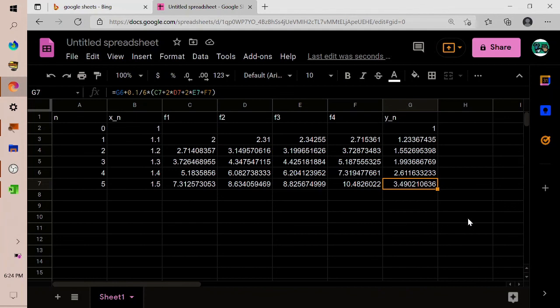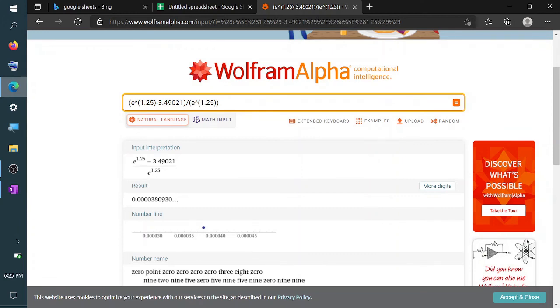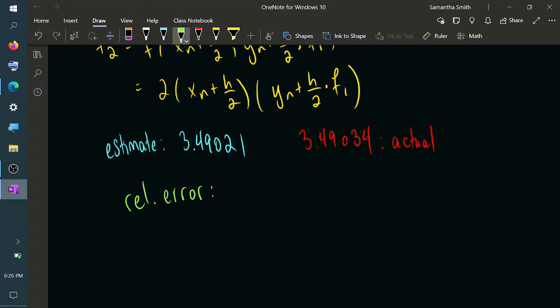RK4 is predicting an output of 3.4902. So right away we can see a huge increase in accuracy between the estimate and the actual value. And if you go ahead and you calculate the relative error, that works out to be, what was it? It works out to be .0034%. Isn't it amazing?